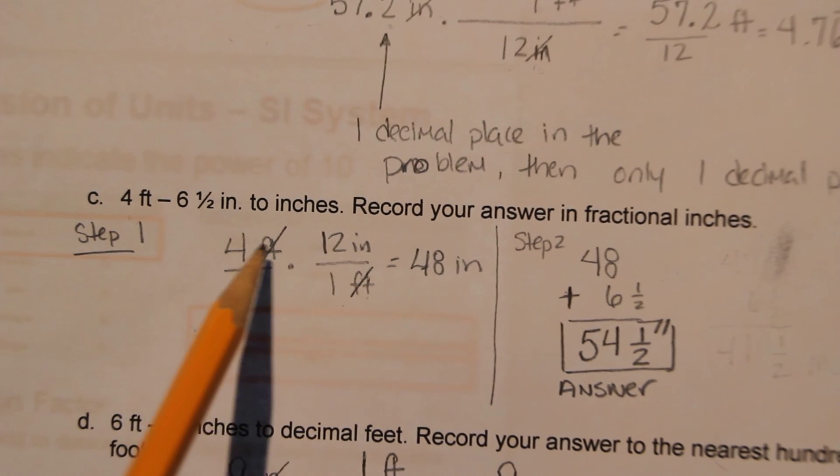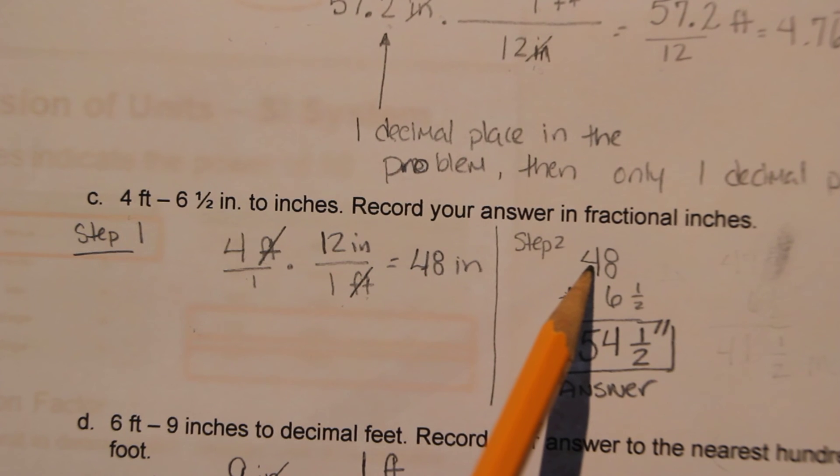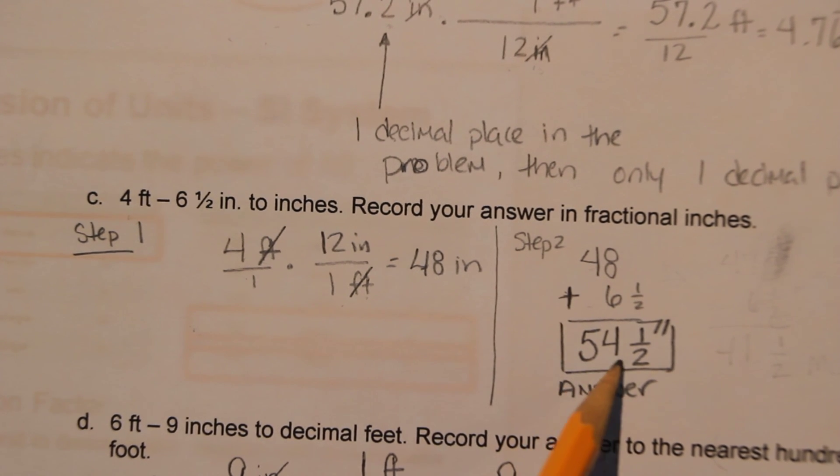So feet are gonna cancel with feet. Four times 12 is 48 inches. We're gonna take the 48 inches and add it to six and a half inches to give you a total of 54 and a half inches.